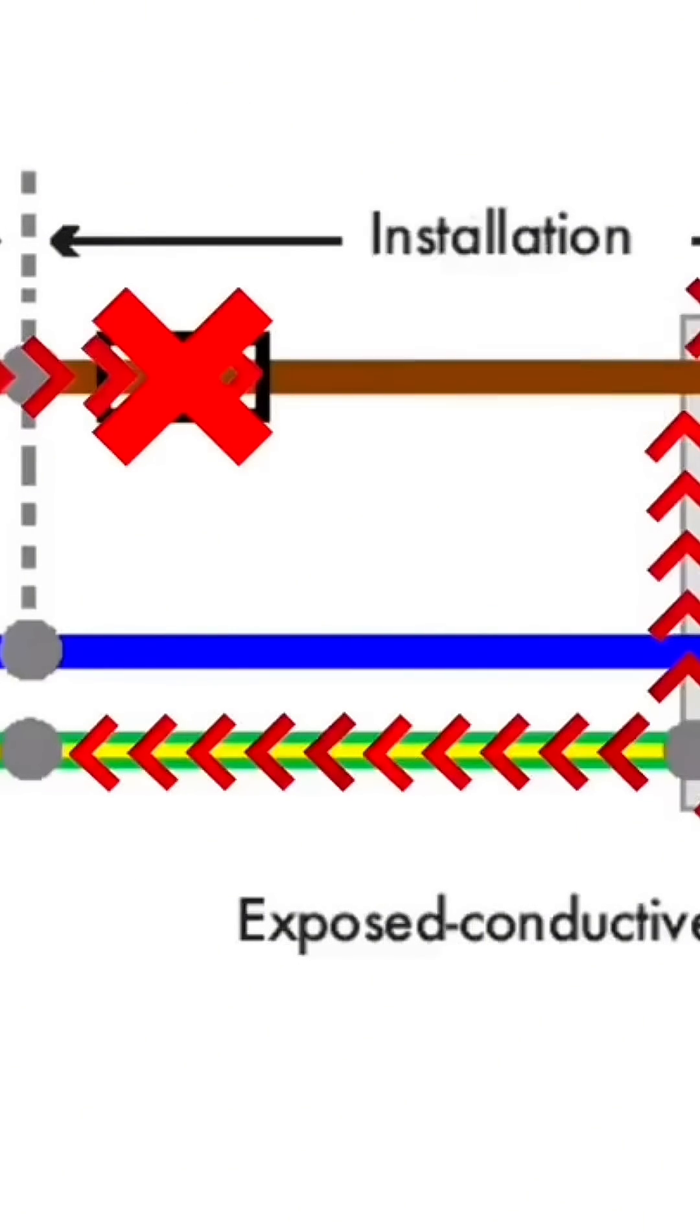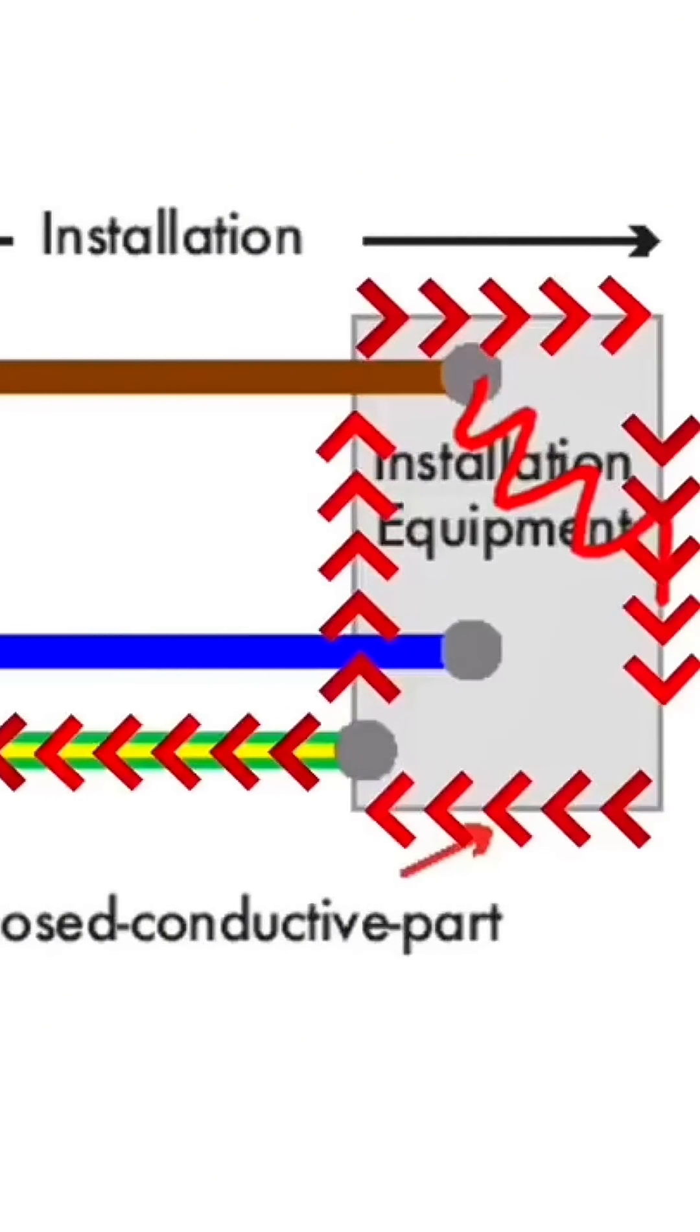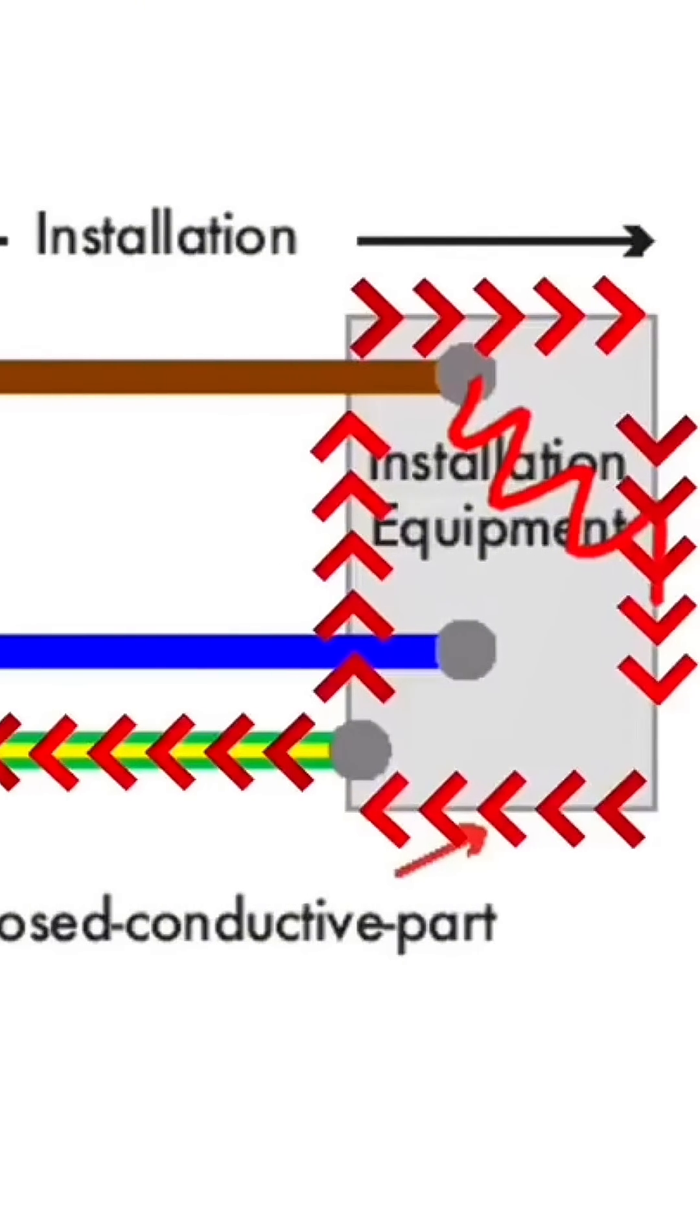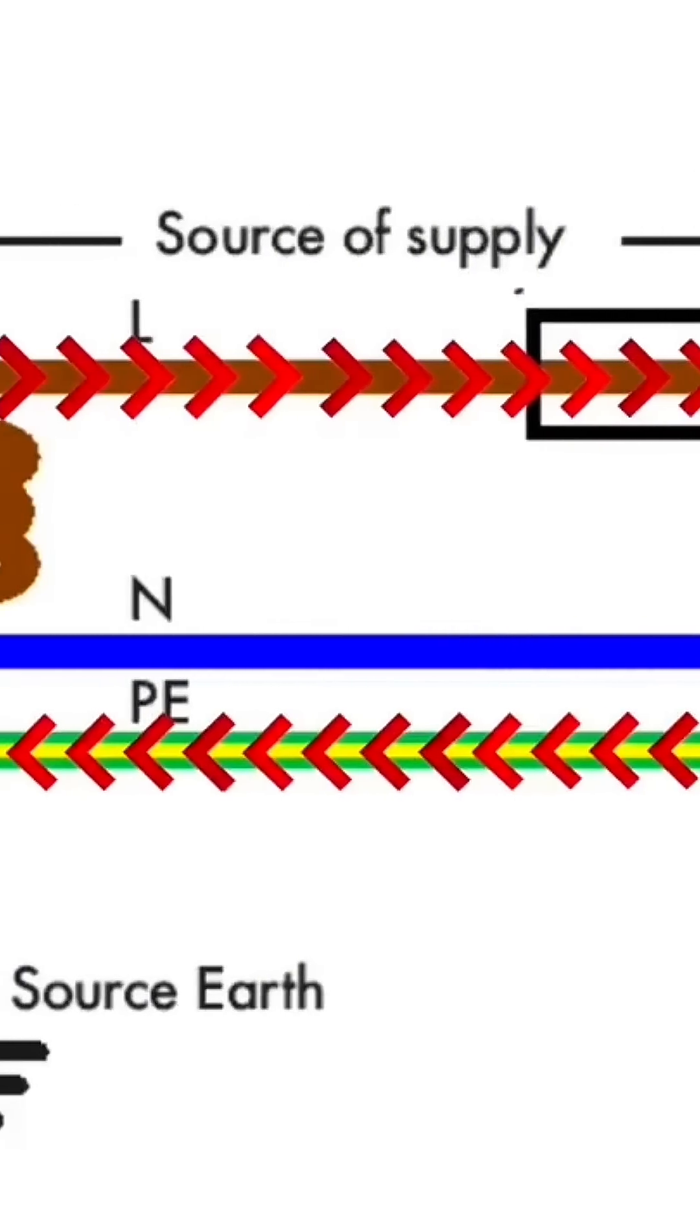This is the full earth fault loop path and needs to be a very low impedance in order to generate a very high fault current to cause rapid operation of the overcurrent protection device.